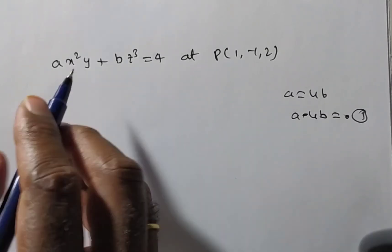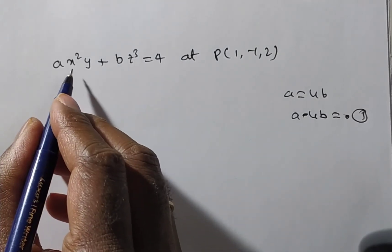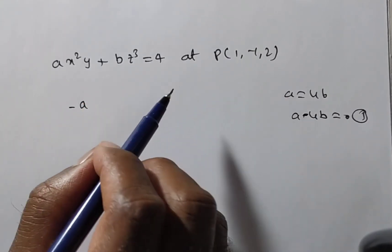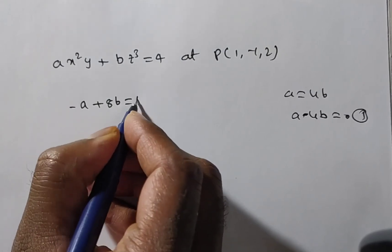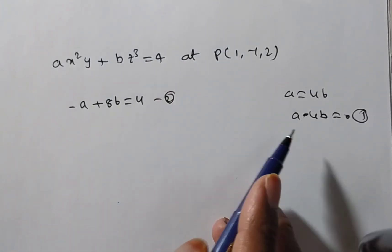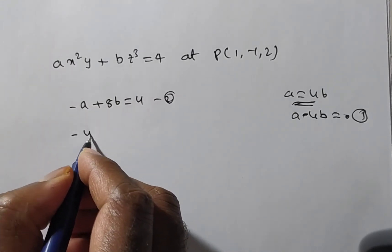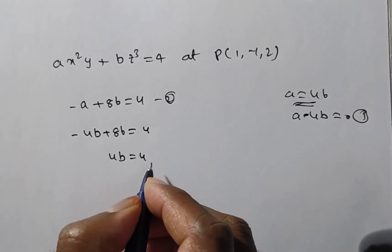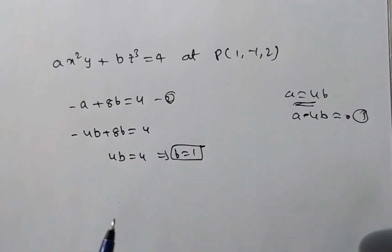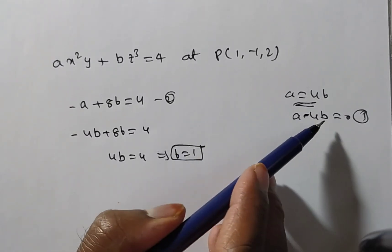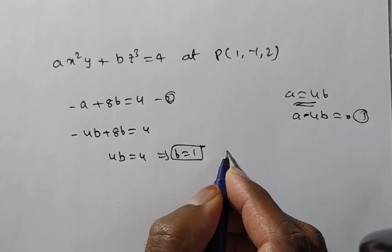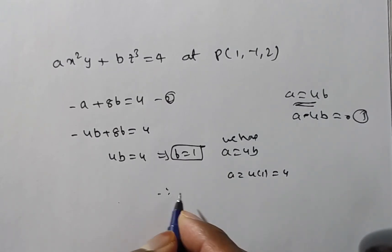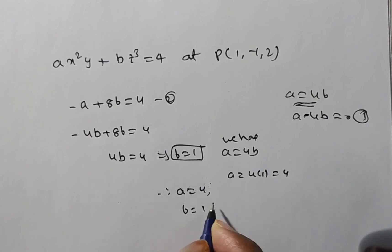Substituting a = 4b into -a + 8b = 4: -4b + 8b = 4, so 4b = 4, which gives b = 1. From a = 4b, we get a = 4 × 1 = 4. Therefore, a = 4 and b = 1.